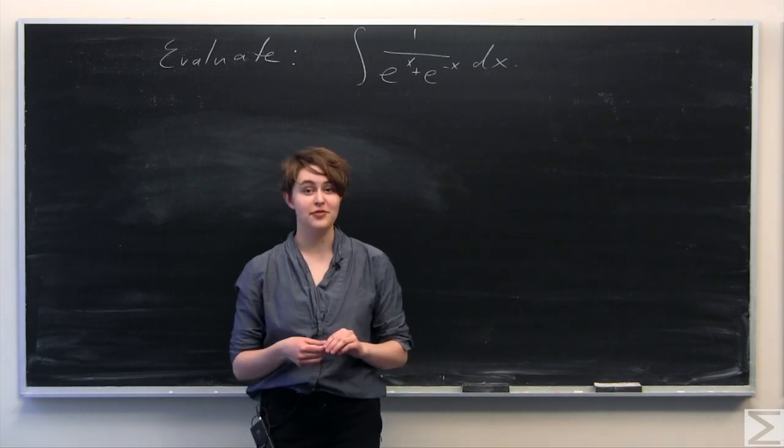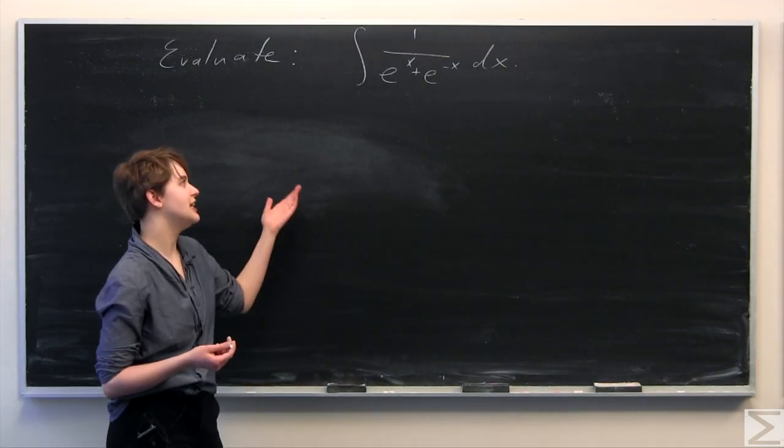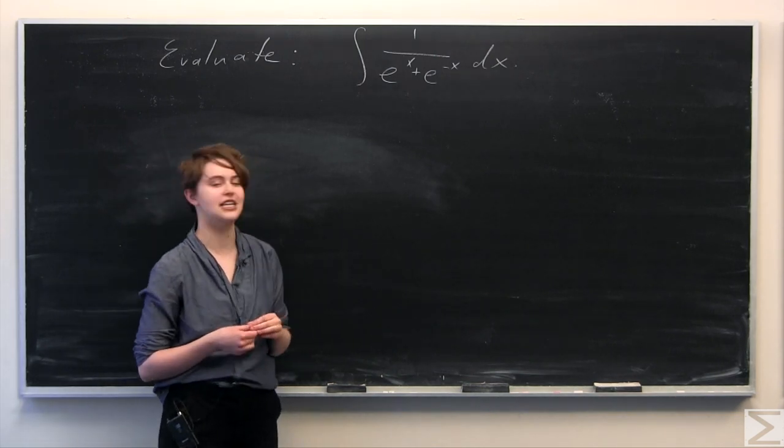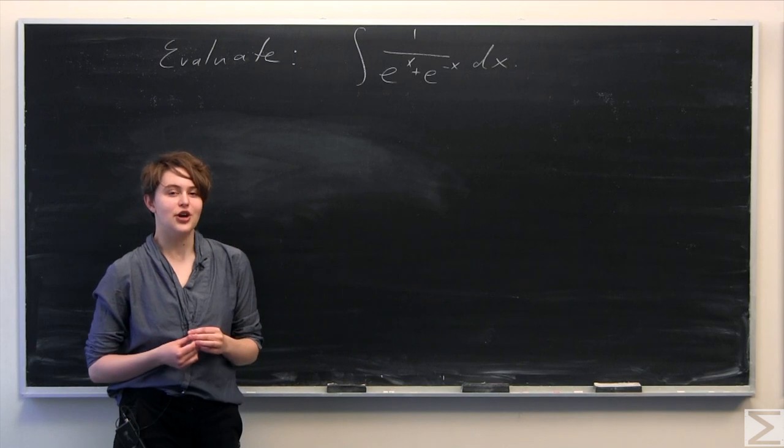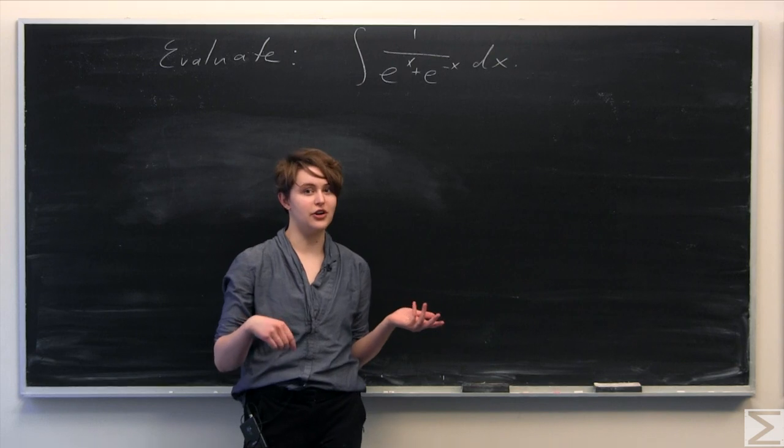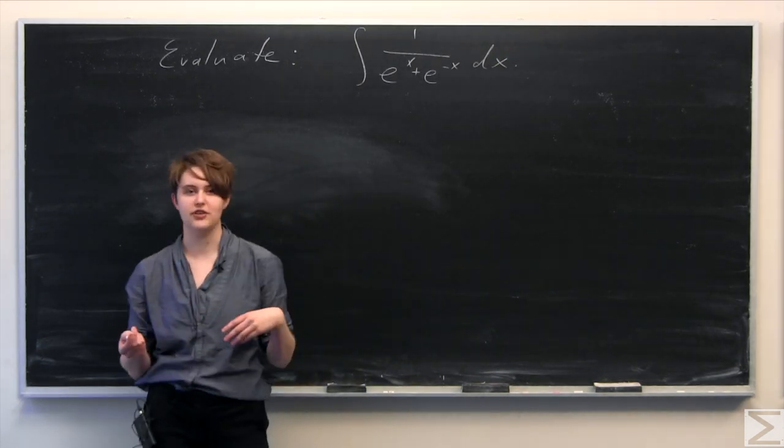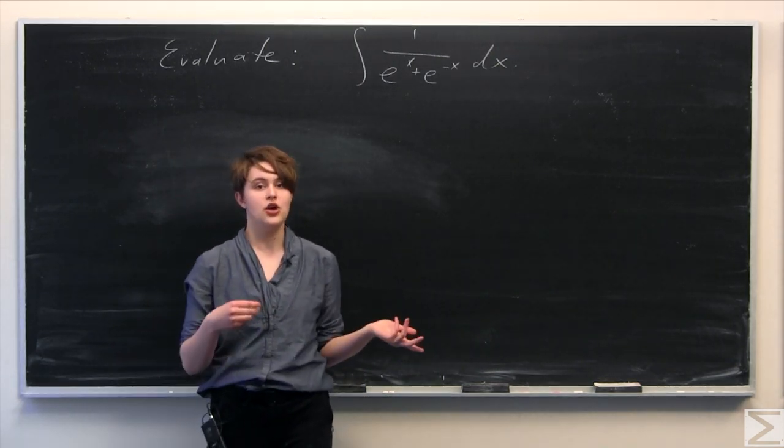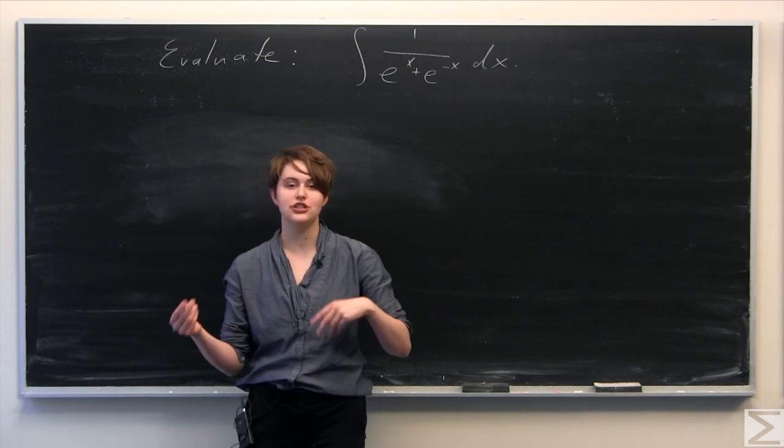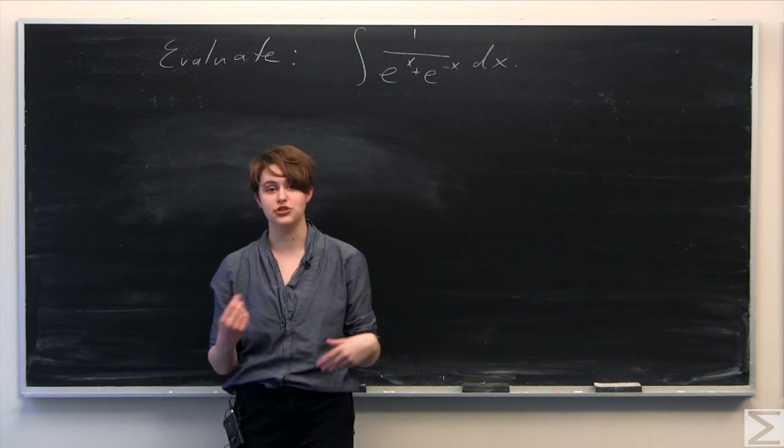This week's Problem of the Week asks you to evaluate the indefinite integral of 1 over quantity e to the x plus e to the negative x dx. Although it might not be immediately obvious how to integrate this, we can use one of our tricks, multiplying the numerator and the denominator by something, to get an integrand that we can either integrate directly or do a u-substitution.